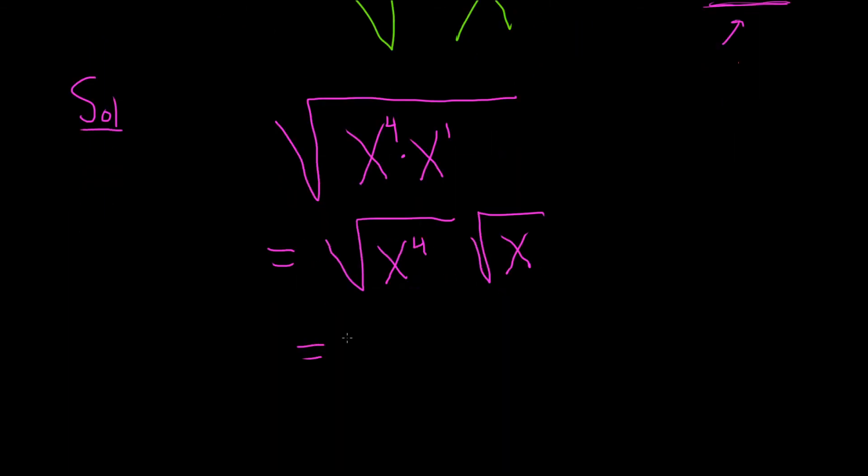And so now this is equal to the square root of, and what you can do here is you can write 4 as a number squared. So it's actually 2 squared. And then here we have the square root of x.